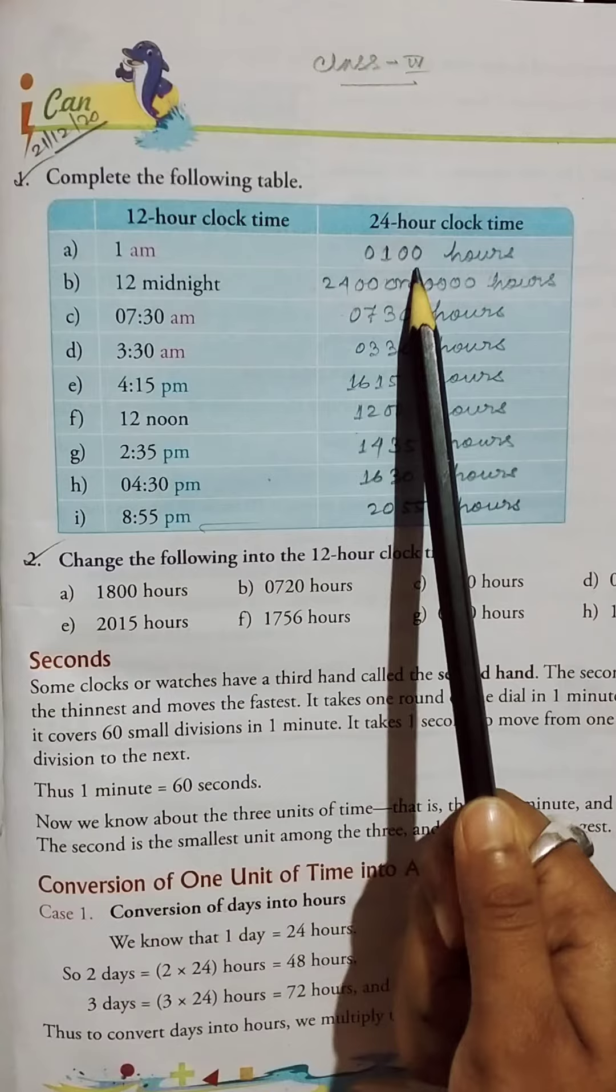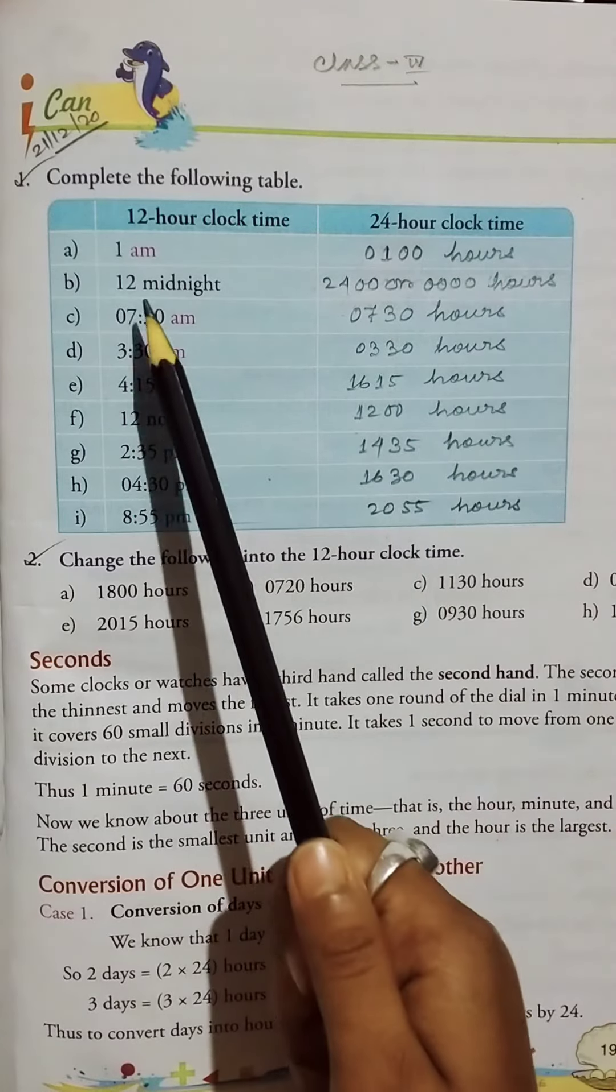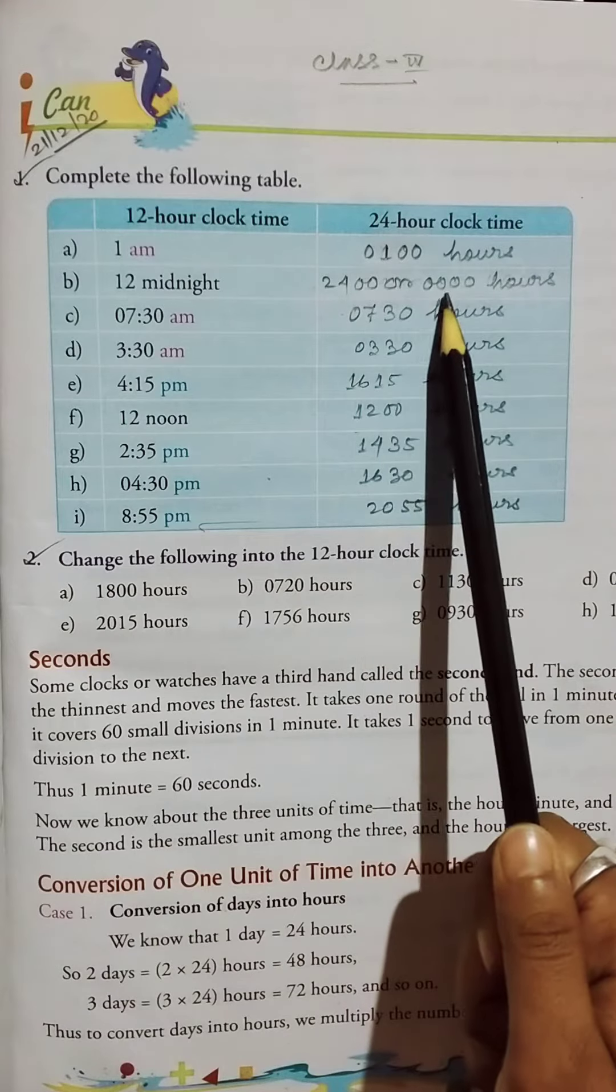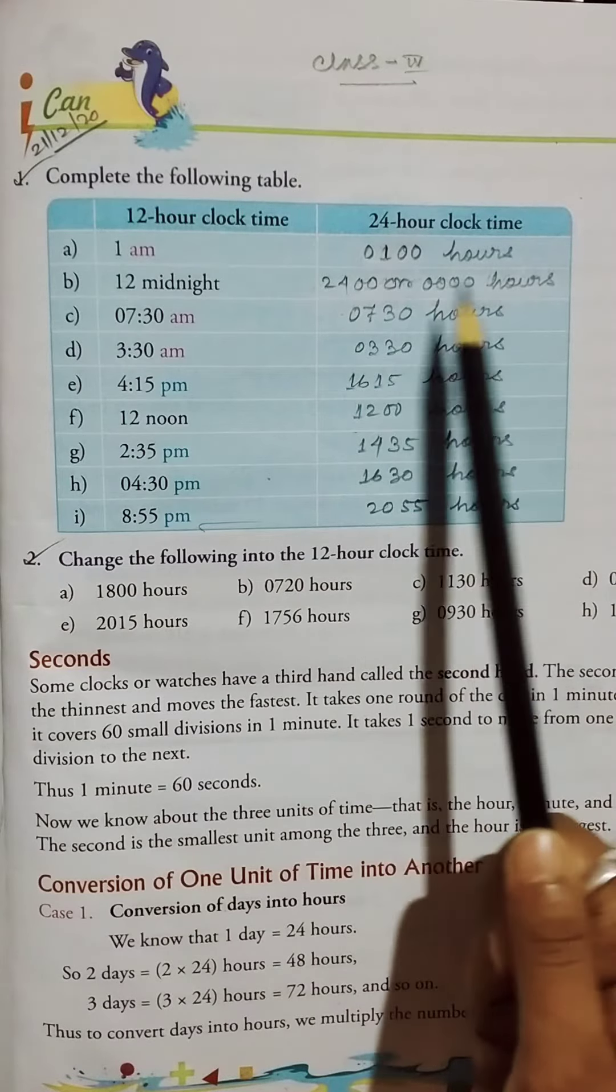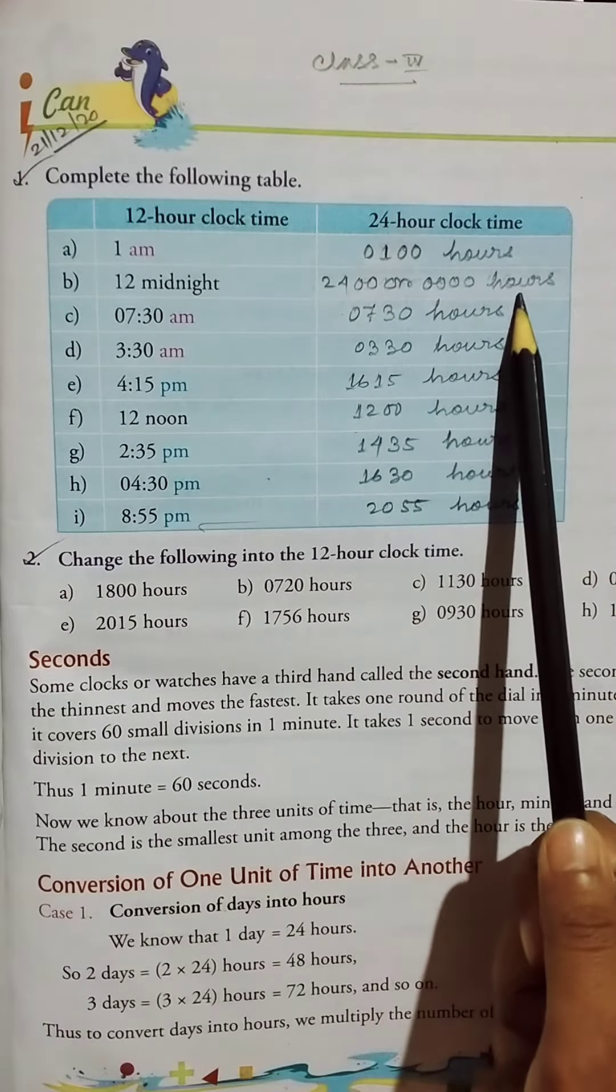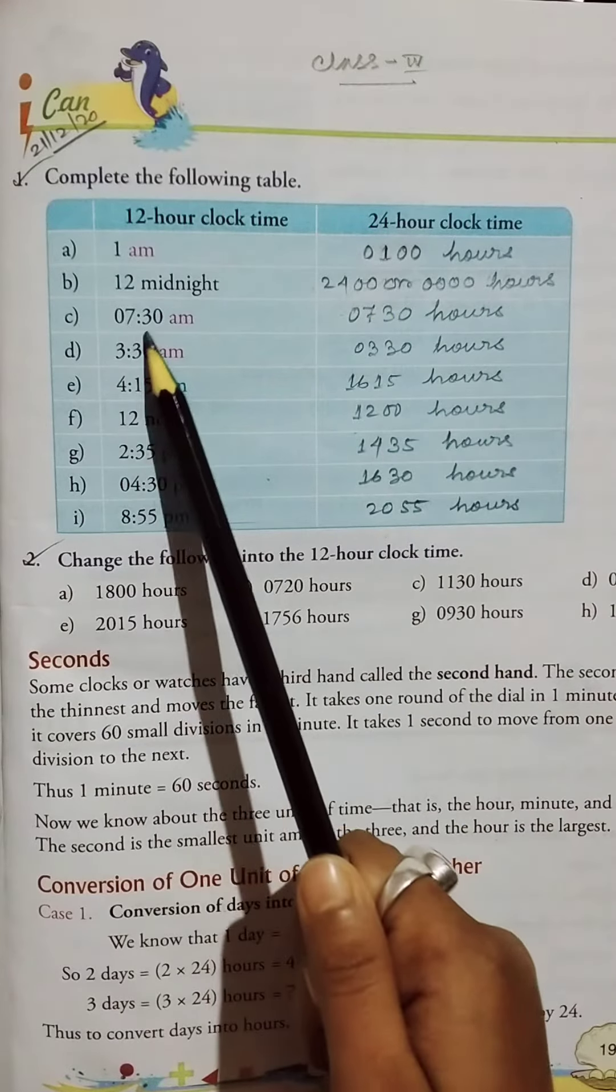So 0100 hours. And then 12 midnight, so 2400 or 0000 hours. Okay, 2400 hours or 0000 hours. Okay, then 7:30 a.m.